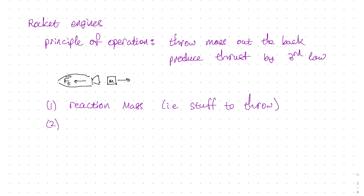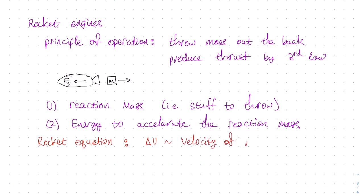What do we need? Well, we need two things. First, we need the reaction mass, the stuff to throw out the back, and second, we need energy to accelerate this reaction mass. Now, rocket flight is governed by the so-called rocket equation, which basically says that the delta V, how much velocity the rocket can gain, is approximately the same as the velocity of the rocket exhaust.